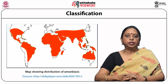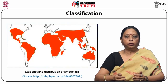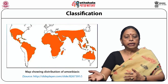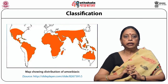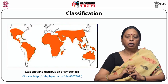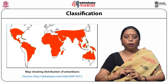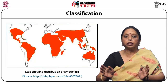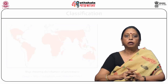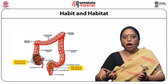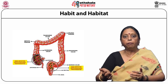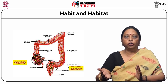Entamoeba histolytica infection is worldwide in distribution, and is more common in the tropics and subtropics. It is the third leading cause of death in developing countries. About 50 million people are infected and 40,000 to 100,000 deaths occur per year. It lives in the mucosa and submucosa of the large intestine — the cecum and sigmoidorectal region of humans.